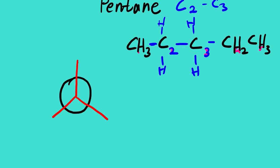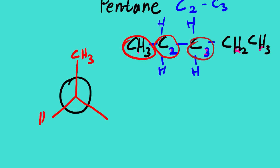Taking this as carbon two and this as carbon three, we are going to draw the Newman projection. For C2 we have CH3 and two hydrogens. For C3, right behind C2, we place our ethyl group.